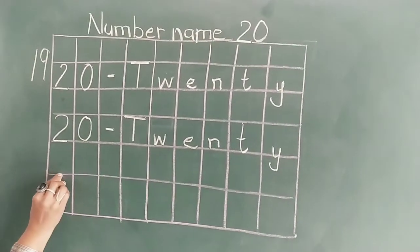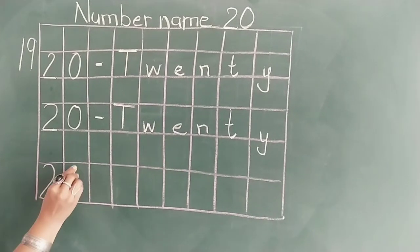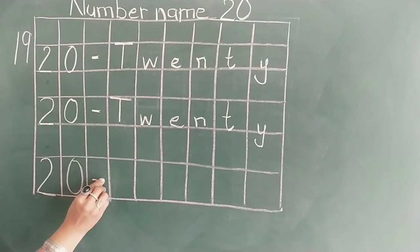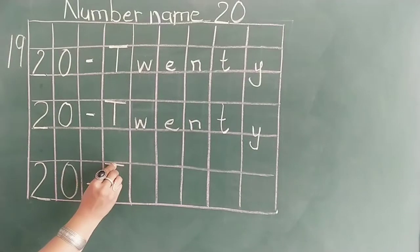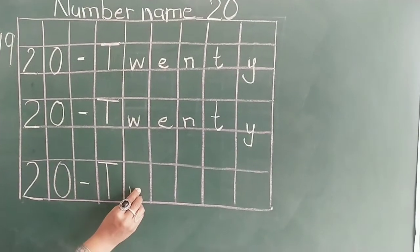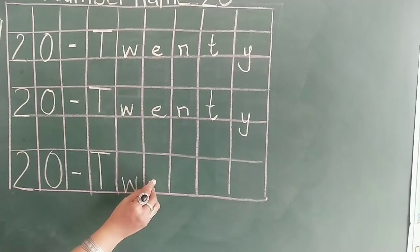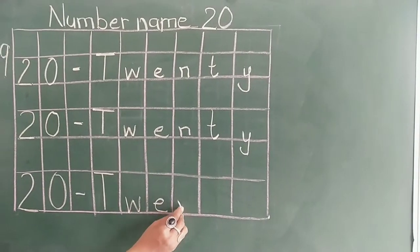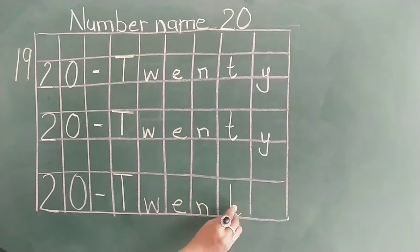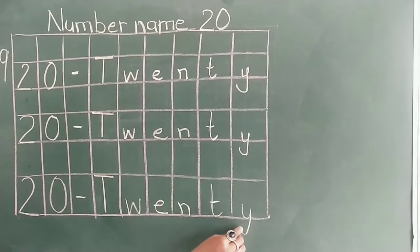Again, leave this line. Write down number 20. Small dash. T, W, E, N, T, Y, 20.